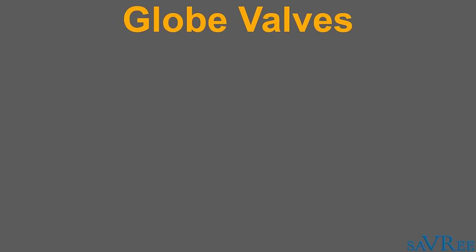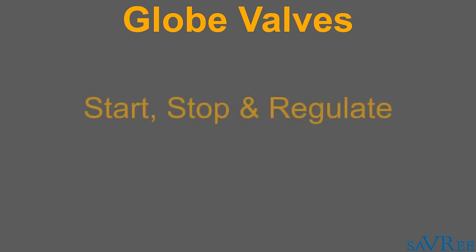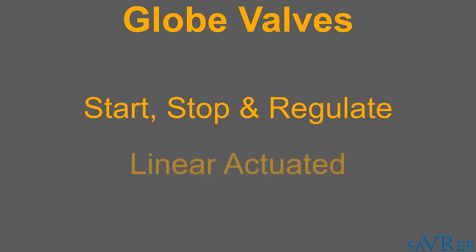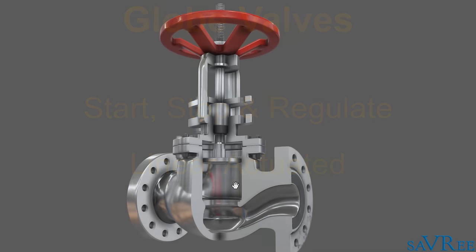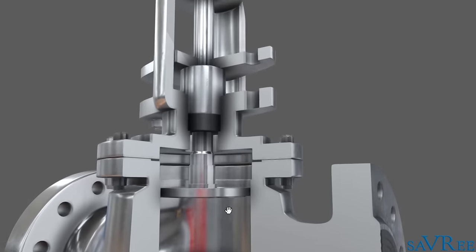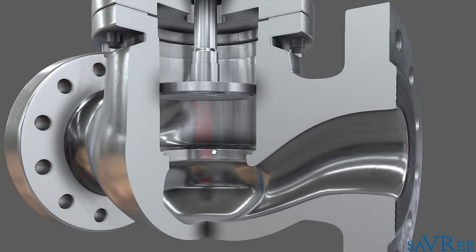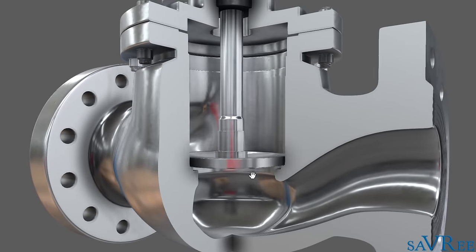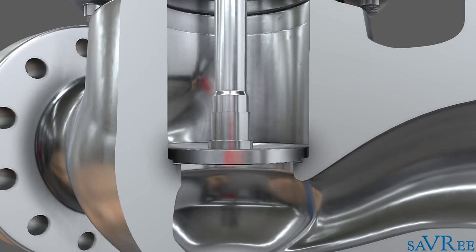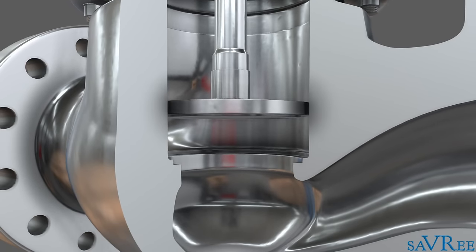Globe valves are used to start, stop, and regulate flow, and they are linearly actuated valves. The reason we can use the globe valve to regulate flow is because as we open the valve, it travels linearly upwards, and as it moves away from the port, we are proportionally allowing more and more flow through the valve.